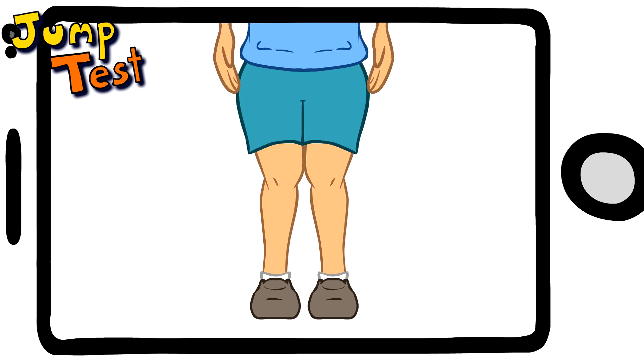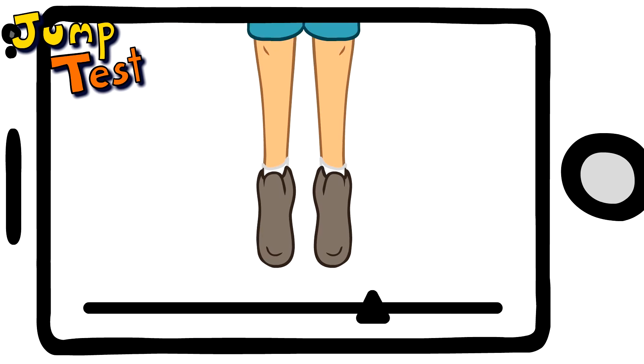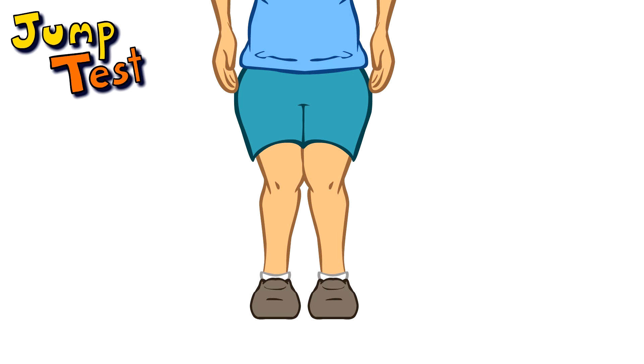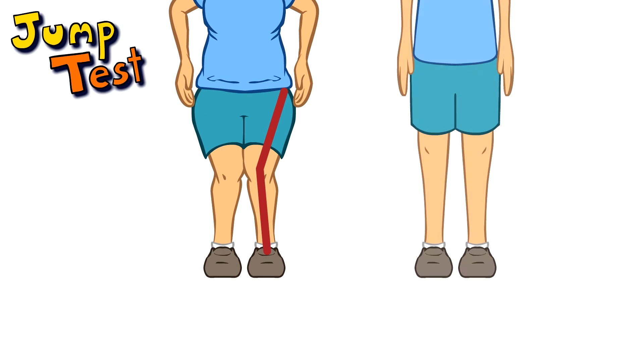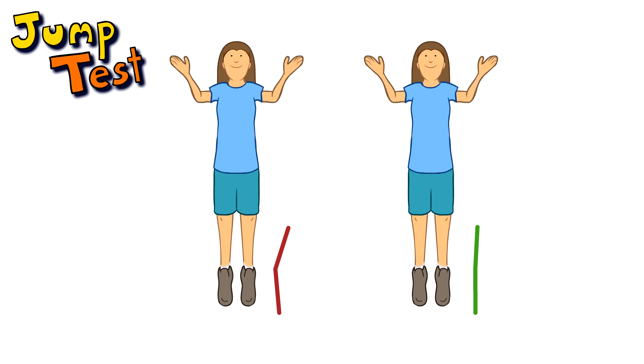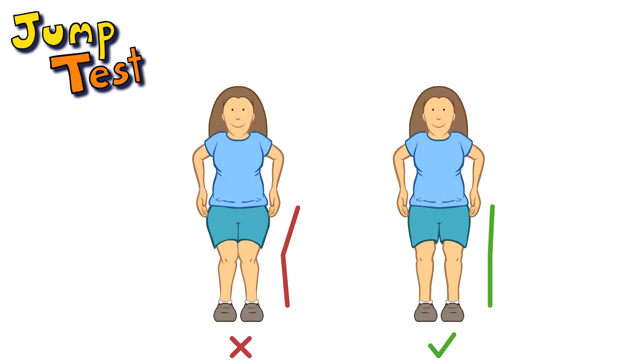Now jump up and down two to three times while the camera is rolling. When you're done, play back the video and look closely at your landing technique. Since the female pelvis already causes the knee to have more of an inward angle, it's important that your knees stay in line when landing. If your knees are coming inward when you land, you have a much higher likelihood of rotating and tearing your ACL.